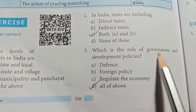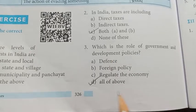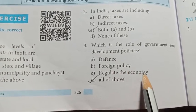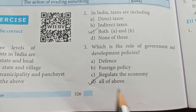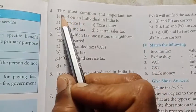Third one: which is the role of government and developed policies? Defense, foreign policy, regulate the economy — all of the above. D option, right answer.